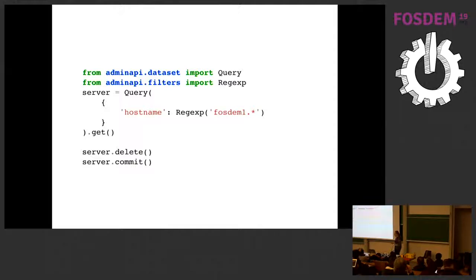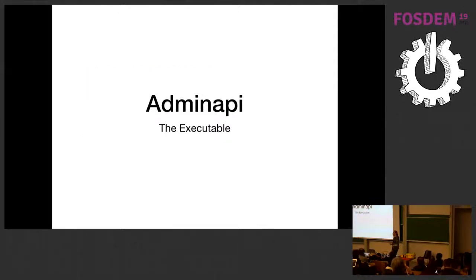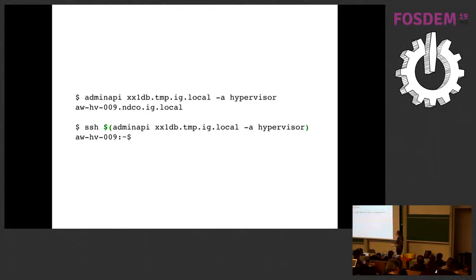For deleting, you make a query, use the 'get' function which ensures exactly one server matches — otherwise raising an exception — and delete it. Deleting doesn't commit immediately; you need to call commit. That was the first and most used way of interacting with ServerAdmin. The second is the CLI client — you give it a filter, here I filter for one exact hostname, and use '-a attribute_name' for every attribute you want back. Having this on the command line is neat — you can pass the output directly to SSH and get a shell on the hypervisor where a VM is running.